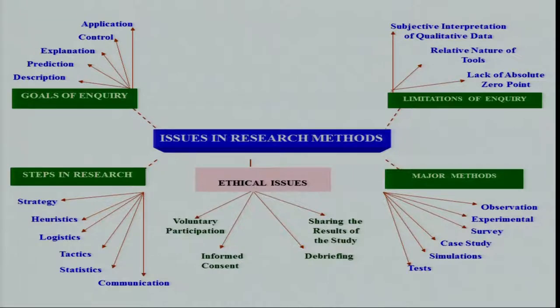When we conduct conventional research in behavioral science, there are certain goals of inquiry. These include description of a particular behavior — a scientific description or analysis following observation. Sometimes we go beyond scientific description and try to make predictions, which is also a goal of inquiry. These predictions through scientific inquiry can be very accurate, and when they are, we try to explain why such behavior has occurred through theoretical and empirical explanations.